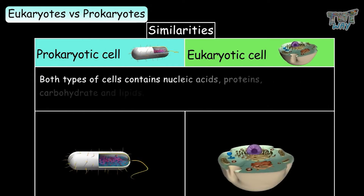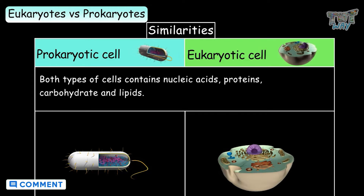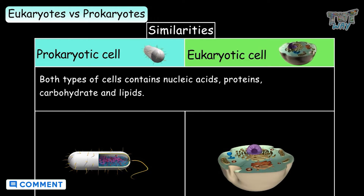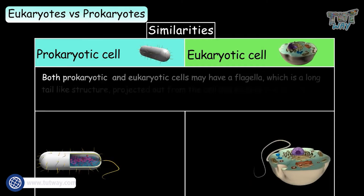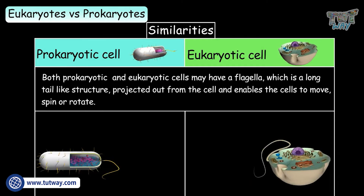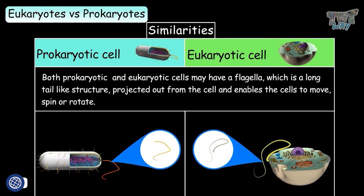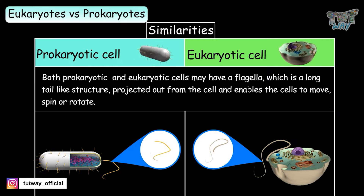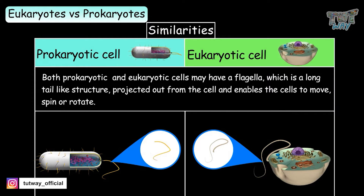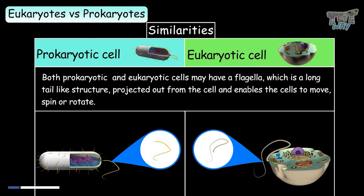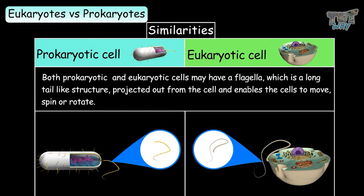Both types of cells contain nucleic acids, proteins, carbohydrates, and lipids. Both prokaryotic and eukaryotic cells may have a flagella, which is a long tail-like structure projected out from the cell and enables the cells to move, spin, or rotate.